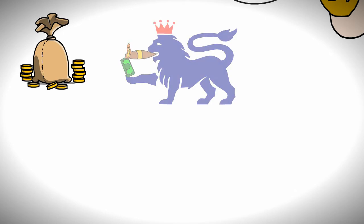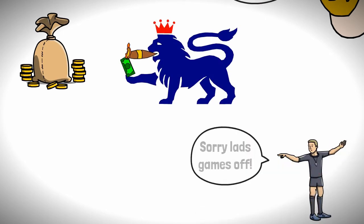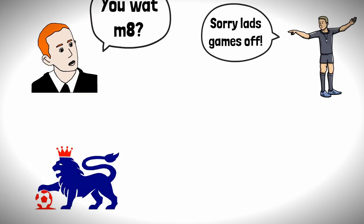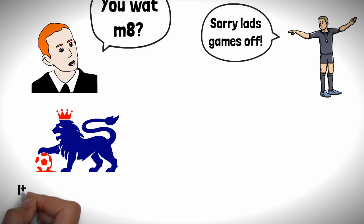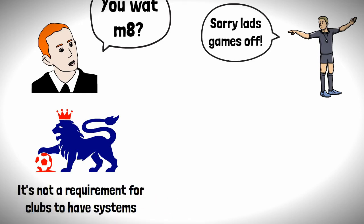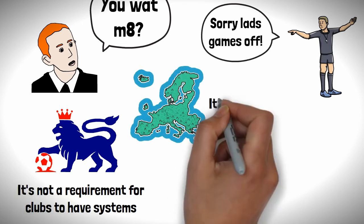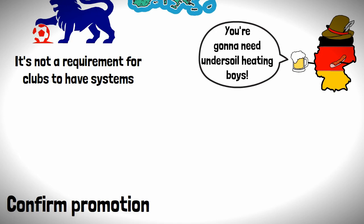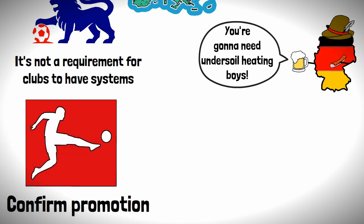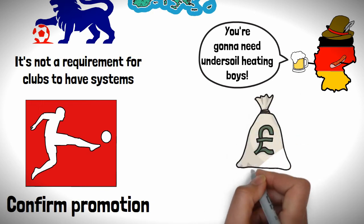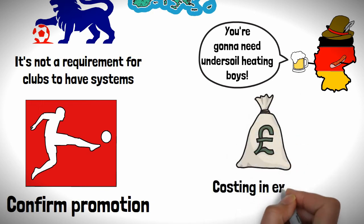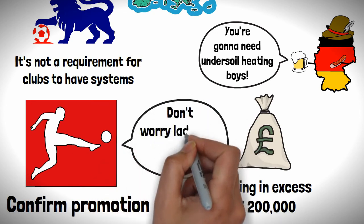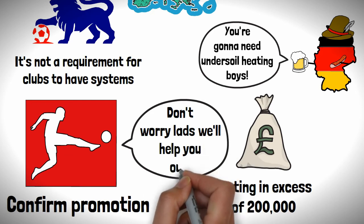Given how much money floats around football these days calling off a game because your pitch is frozen isn't a great excuse therefore you would expect all top flight clubs in England to have them however it's not a requirement for clubs to have these systems. On the continent it's a different story with German football requiring clubs to have one to confirm promotion to the top flight or the second league. As you can probably guess these systems don't come cheap costing in excess of 200,000 pounds but the kind folks in the German league can dish out grants to clubs to help cover some of the costs of installing under soil heating.